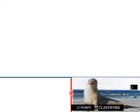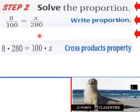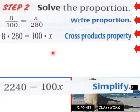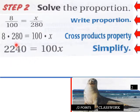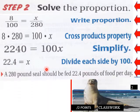To solve that proportion, we cross multiply: 8 times 280 equals 100 times x. When we multiply out, 2240 equals 100x. Divide through by 100 and we end up with x equals 22.4. So the 280-pound seal should be fed 22.4 pounds of food per day.